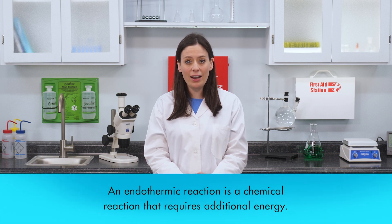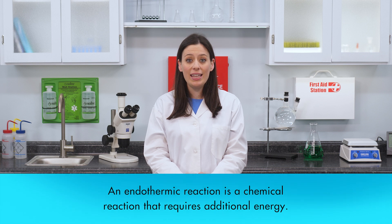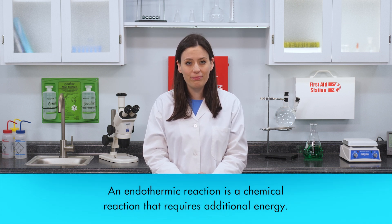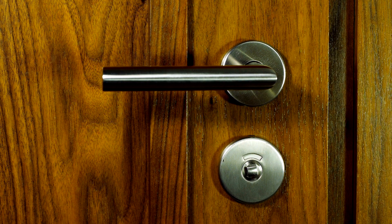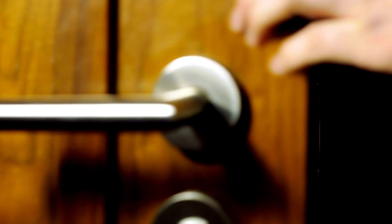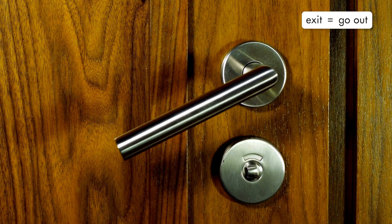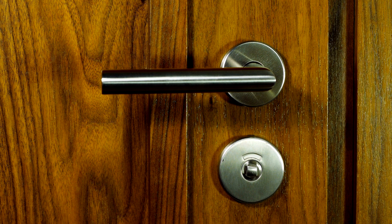However, some chemical reactions require additional energy to break the chemical bonds that hold atoms or ions together. A chemical reaction that requires additional energy is an endothermic reaction. To help remember the difference between exothermic and endothermic, think of this. The word exothermic begins with the letters EX, which are also the first two letters of the word exit. To exit means to go out. Energy exits a reaction in an exothermic reaction.